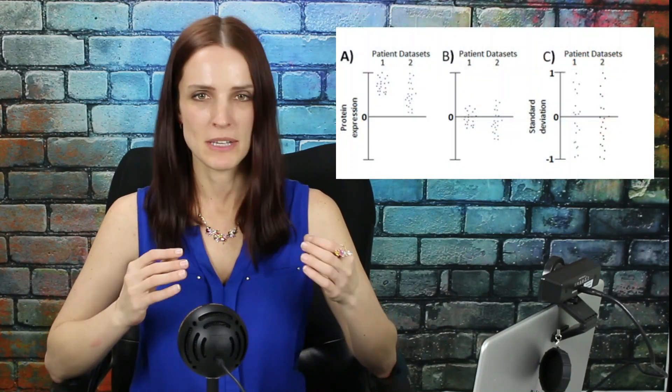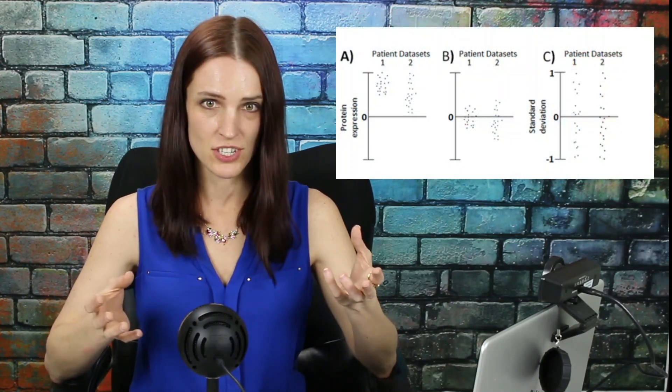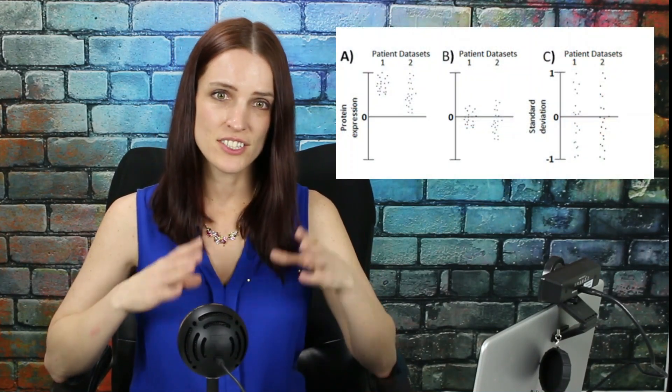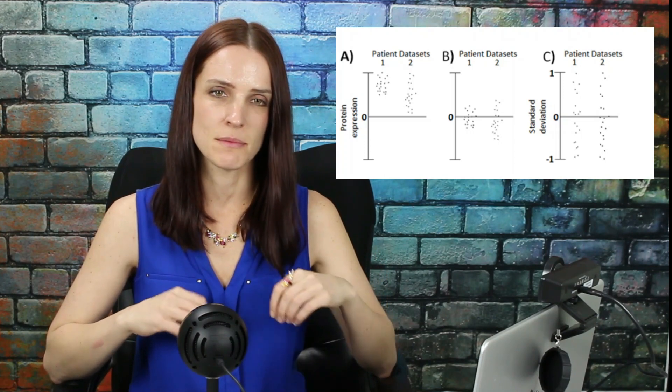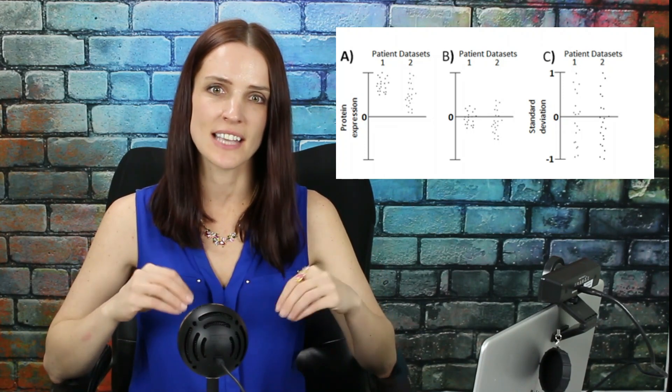Here are the steps of the analysis. First, the protein expression of each protein across the patients is centered and then scaled by taking into account the mean and standard deviation. This transformation means that the dataset has a mean of zero and a scale of one, just like hierarchical clustering.